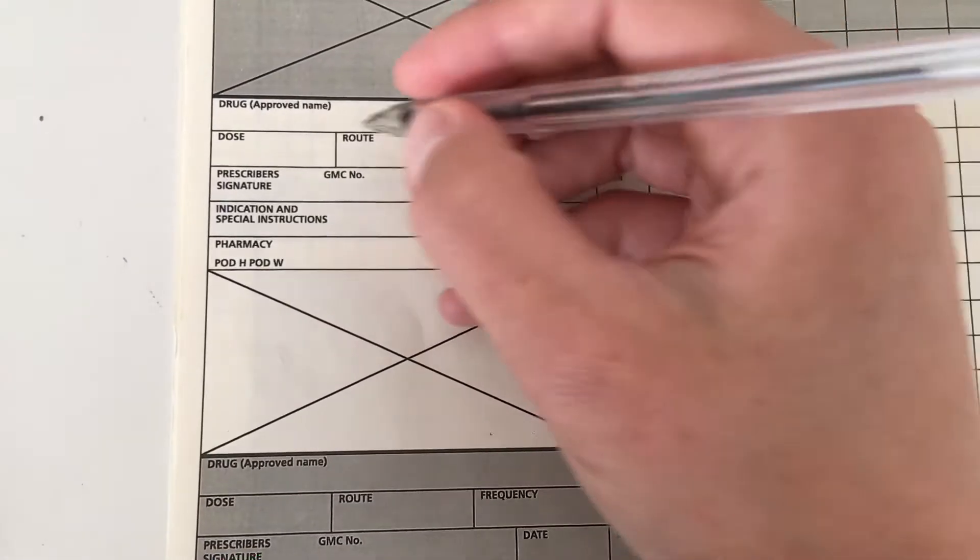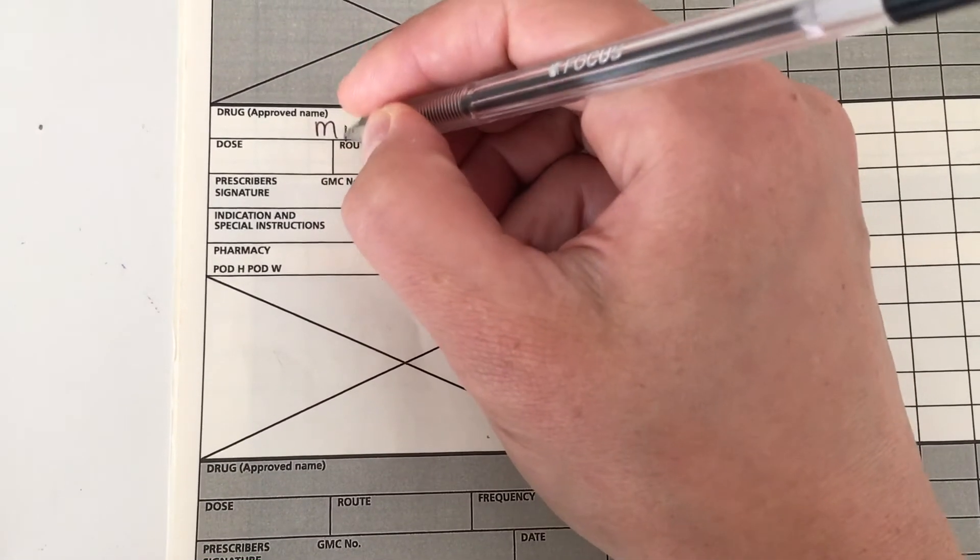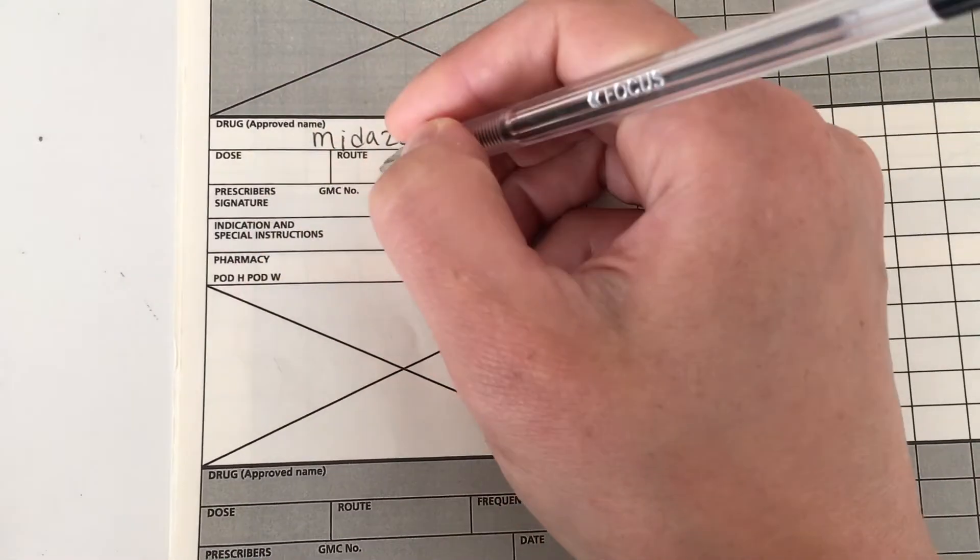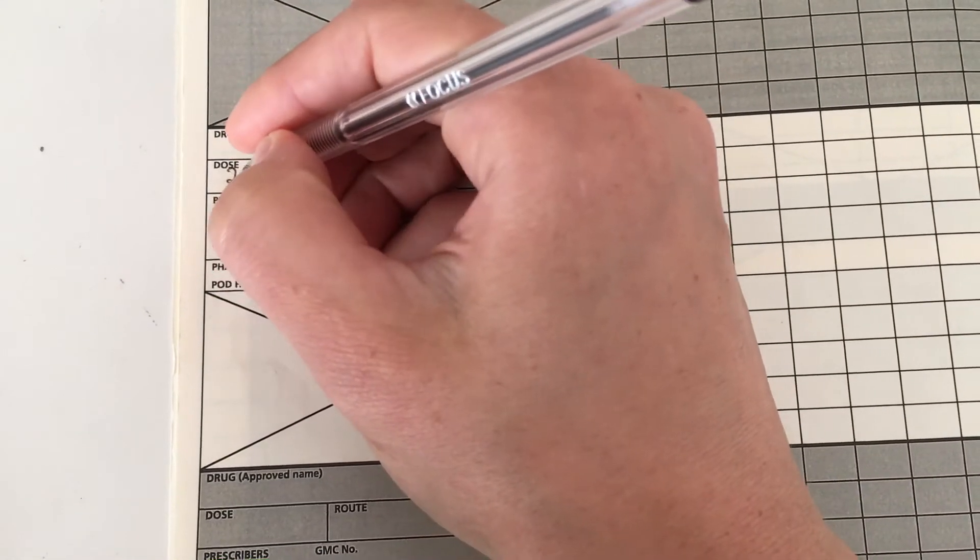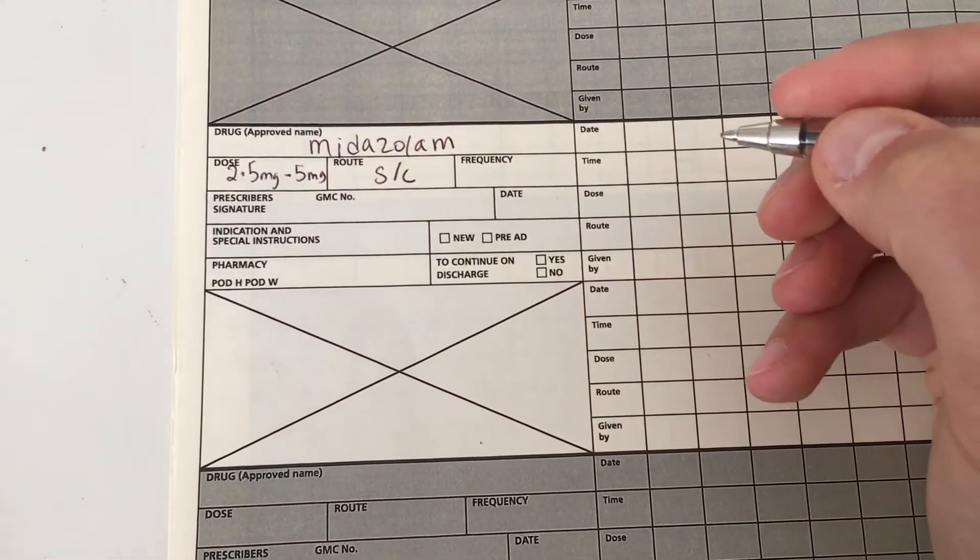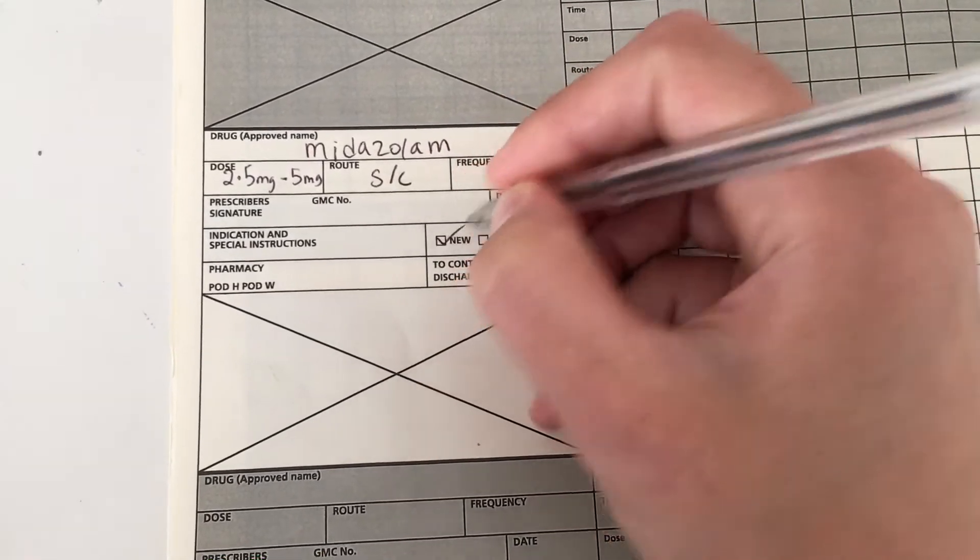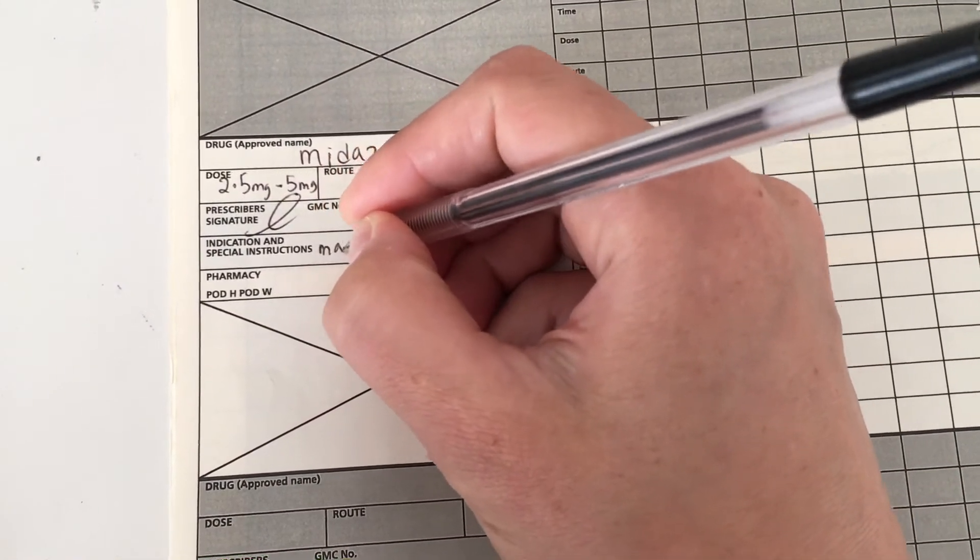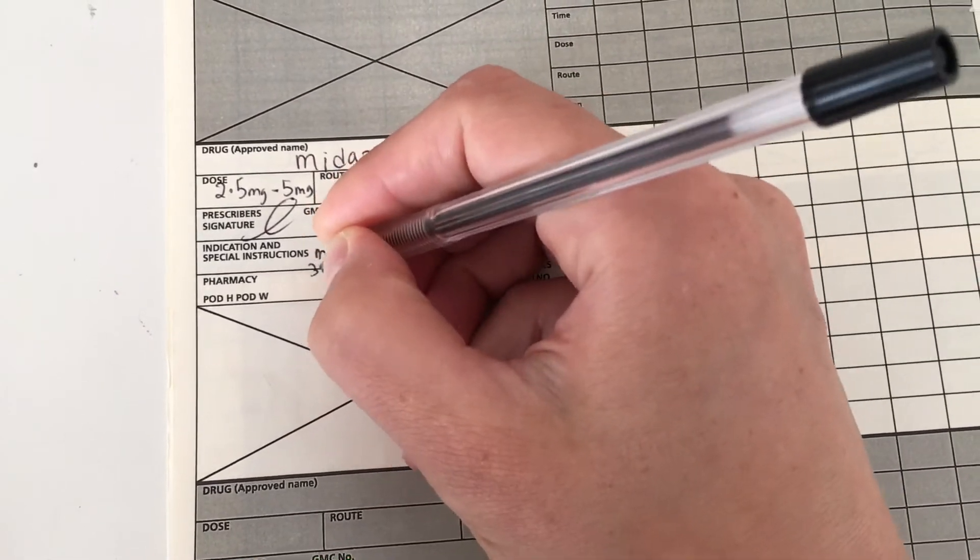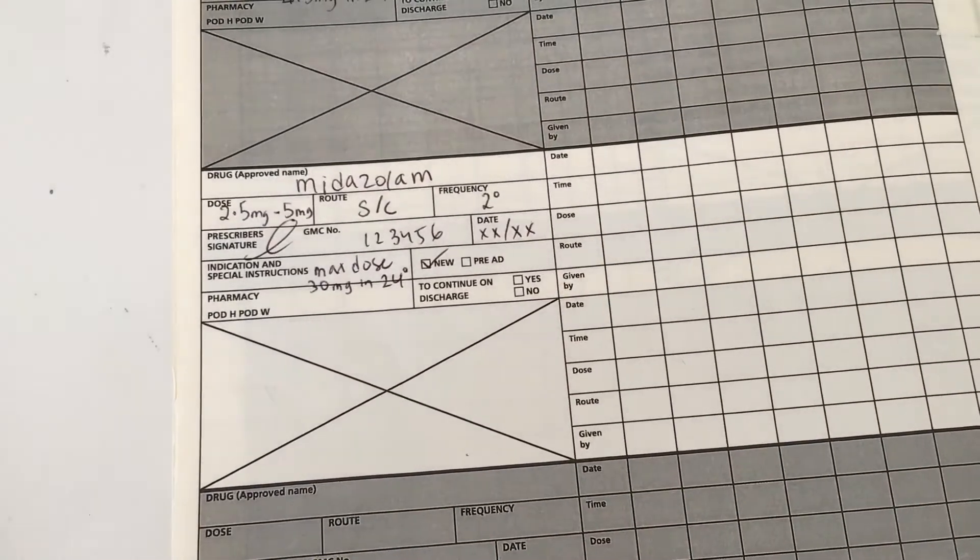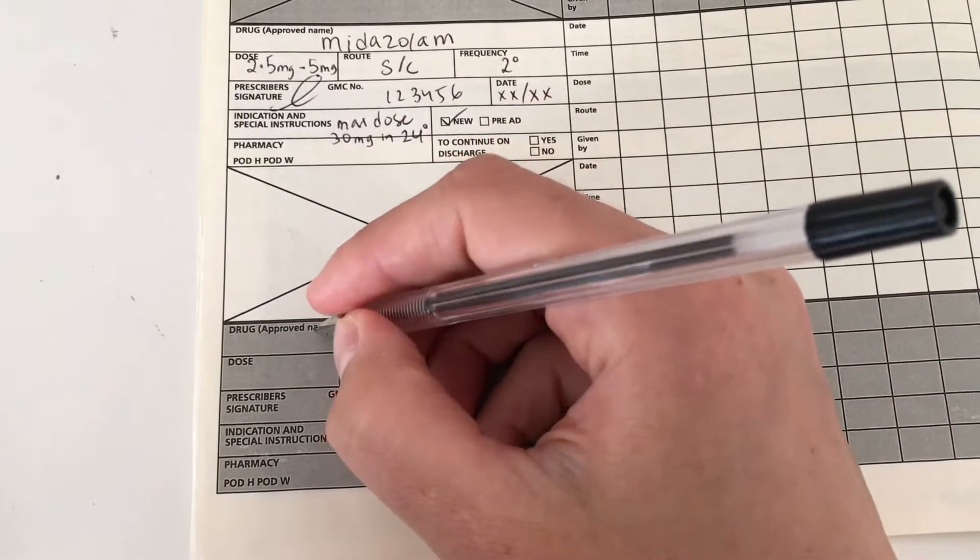Midazolam is our third medication and this is also given for agitation and anxiety. The dose is 2.5 milligrams to 5 milligrams and again the frequency is two hourly. Sign, date, GMC number as per usual. As you can see for every prescription you have to make sure you include these basic elements. I've put in the maximum dose which in this case is 30 milligrams in 24 hours. End of life meds may be given in a syringe driver and not subcuts but that's beyond the scope of this video.